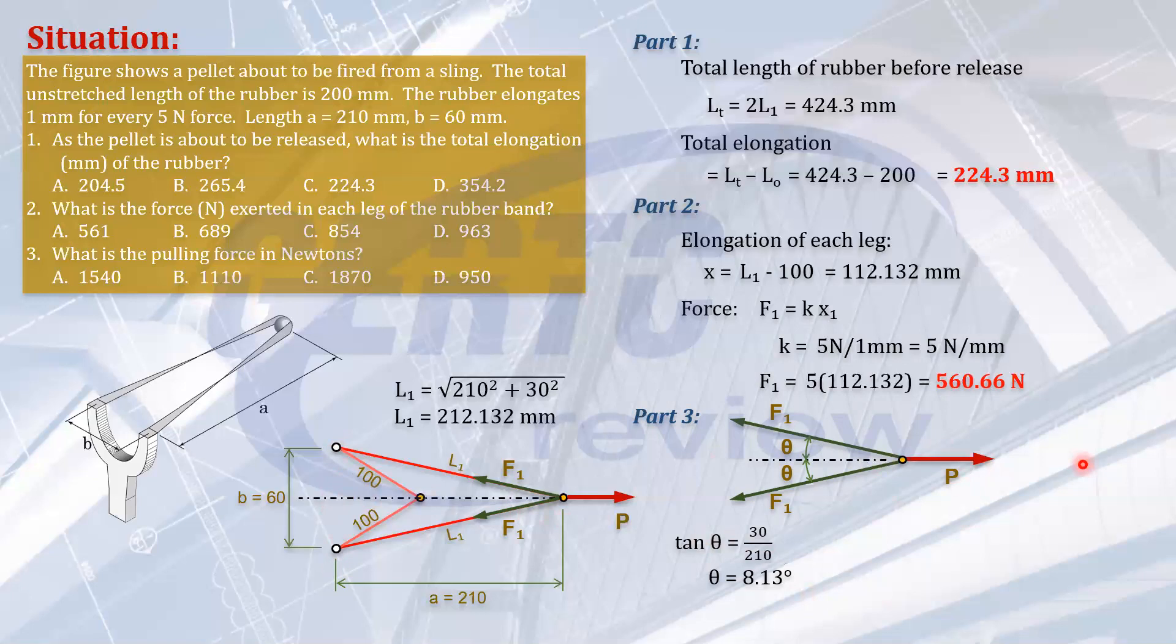So finally, summation of forces horizontal zero. Force to the right P equals the forces to the left, which is 2 times F1 cosine of theta. And that will give you 1110 newtons. So that's it.